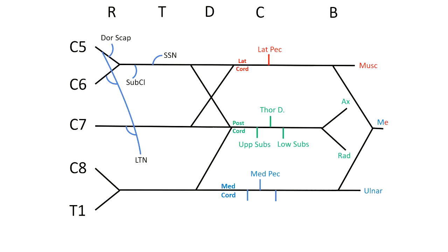The medial cord gives you the medial pectoral nerve, as well as the two sensory nerves, one going to the arm and one going to the forearm. The medial antibrachial cutaneous nerve and the medial brachial cutaneous nerve, as well as the ulnar nerve and also the medial head of the median nerve.